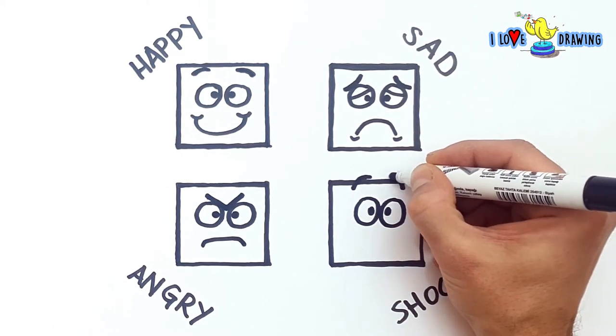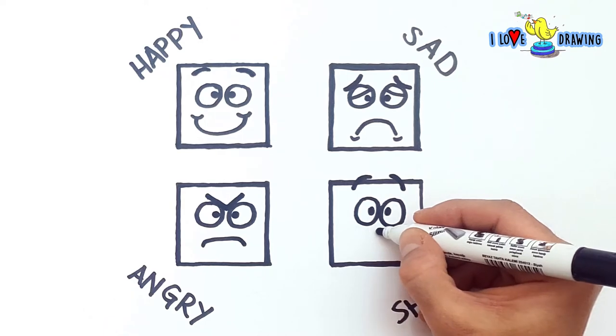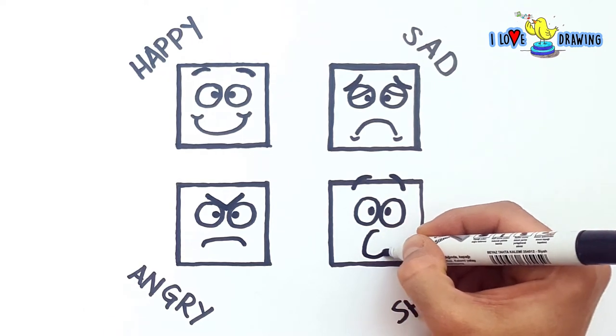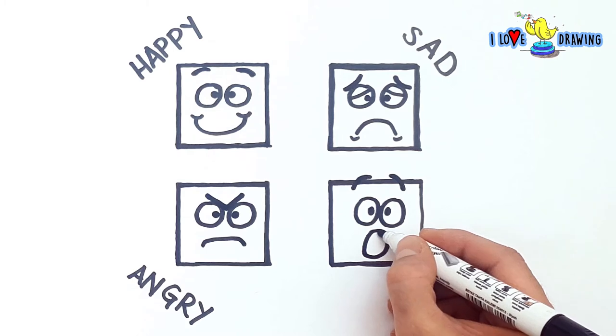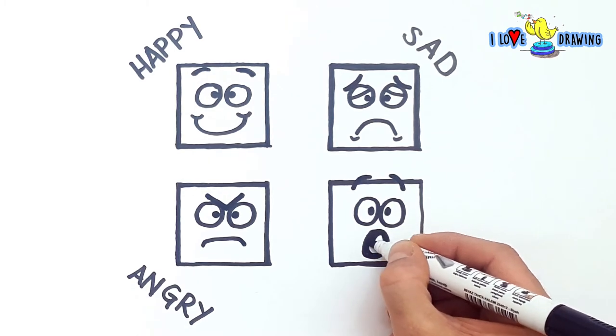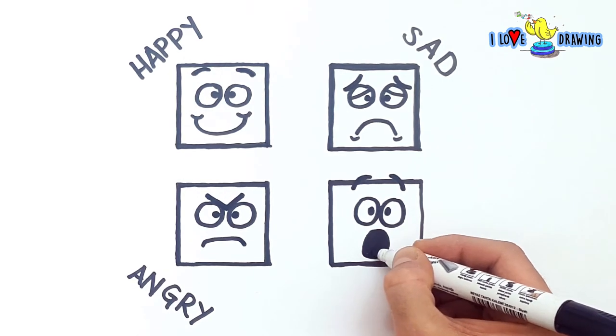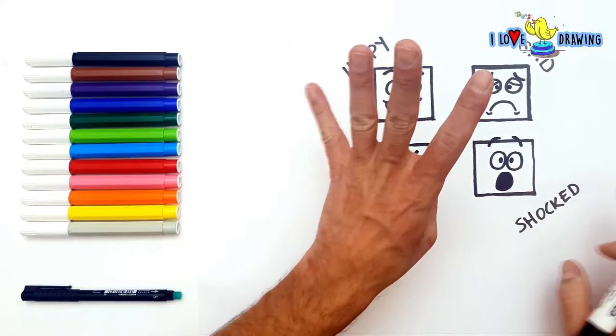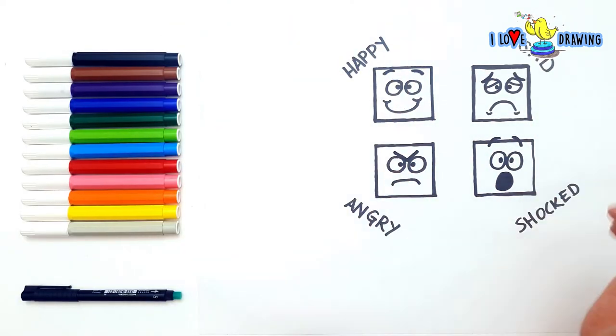The mouth of a shocked character will be wide open too. Just like the eyeballs. It's going to be making like this oooh, wow, wow shape. And with that, we are done with drawing all the expressions for our square faces. Are we done?